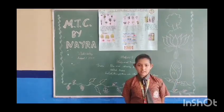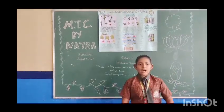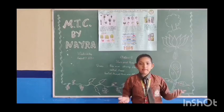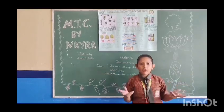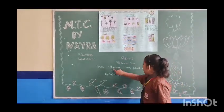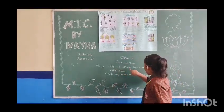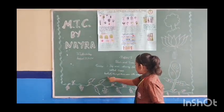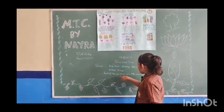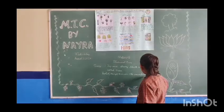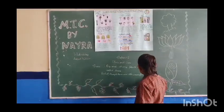We have discussed what are plants. Now we will discuss what are trees. Big and strong plants are called trees. Mango and neem are the examples of trees.